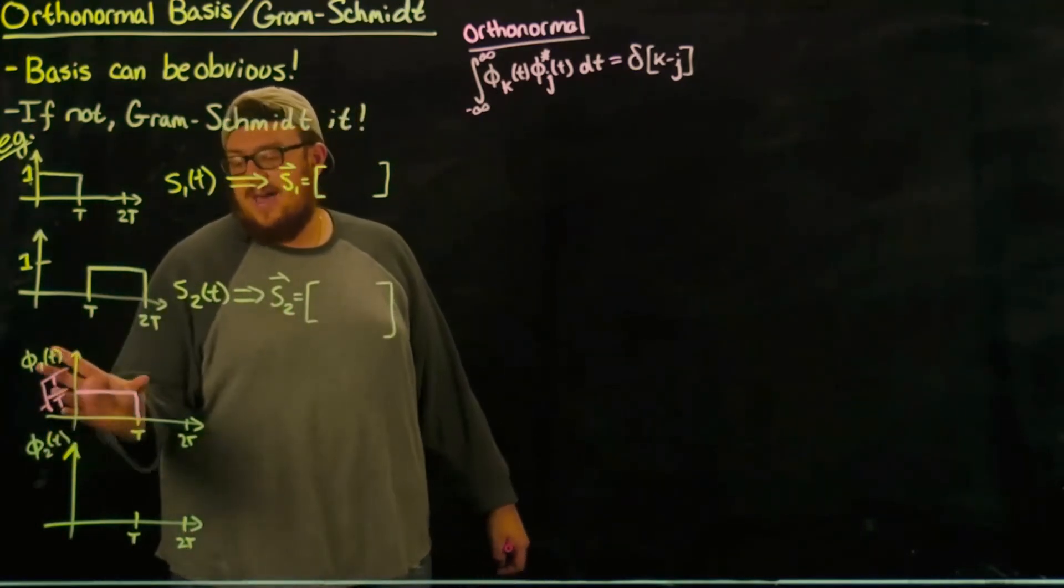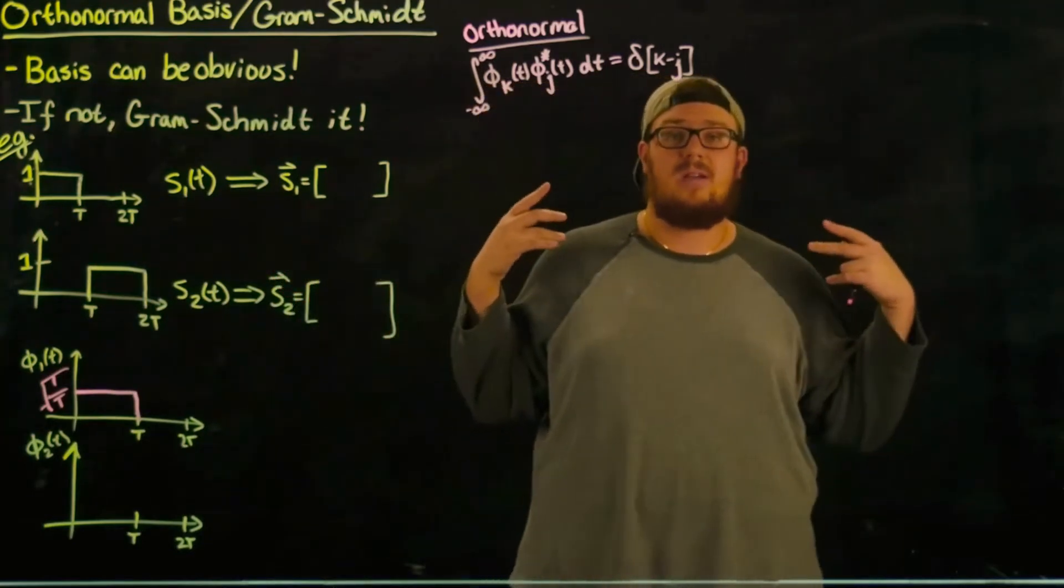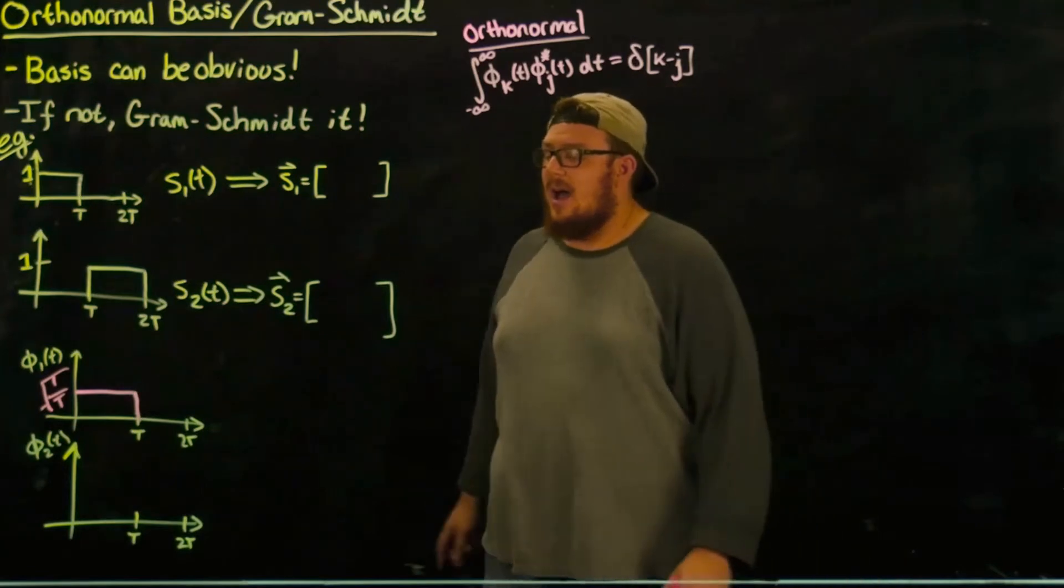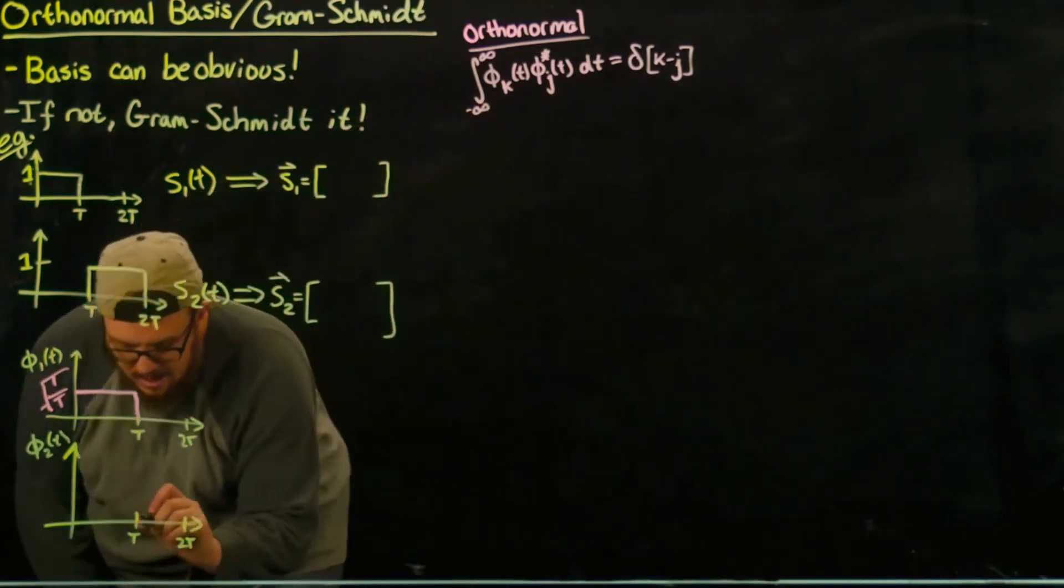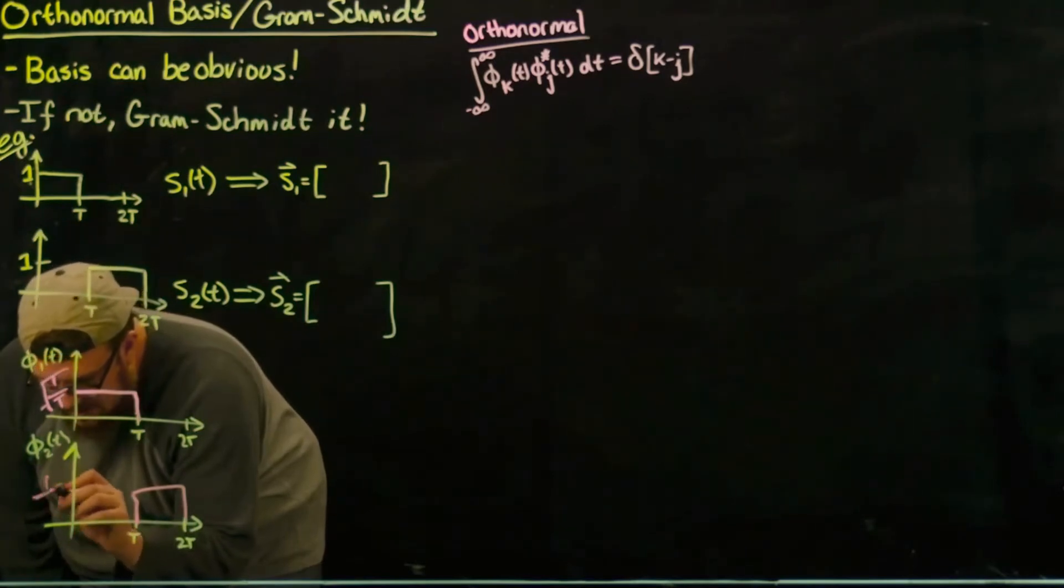And this is a box, so the area of a box is 1/T times T, so the integral will be 1/T times T which is 1, which is what we wanted. You can do the same thing over here and then have this also be height 1 over √T.